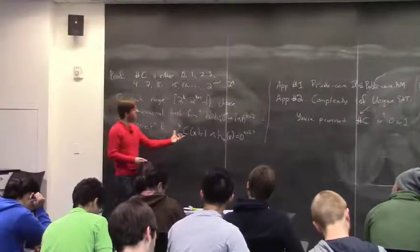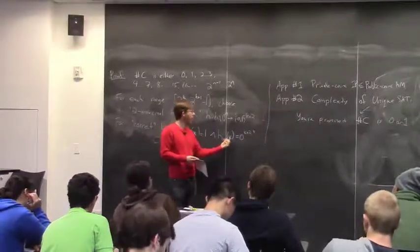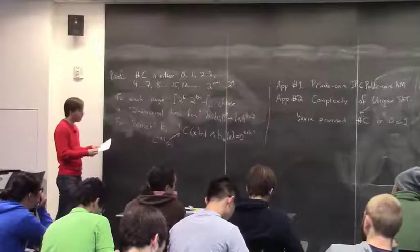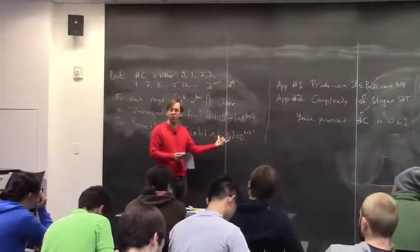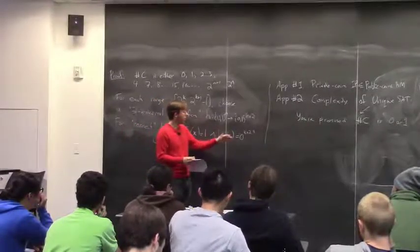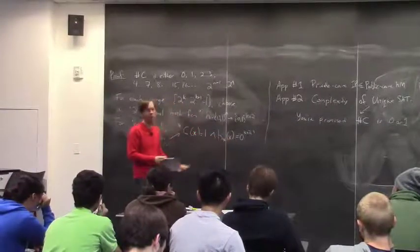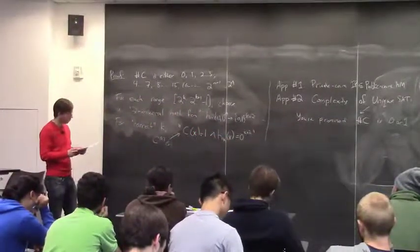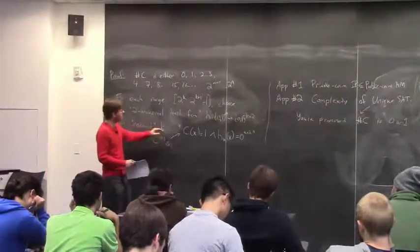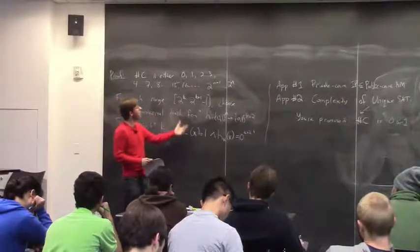For the correct k — the k such that the number of satisfying assignments of C is really in the range 2^k to 2^(k+1) — we look at the k-th circuit C_k of x, defined as: C(x) = 1 AND h_k(x) = the all-zero string. The k-th circuit is the same as C but with a check that the hash of x is the all-zero string. These hash functions are easy to compute — it's just dot products of binary vectors — so there's a polynomial-size circuit that computes this.